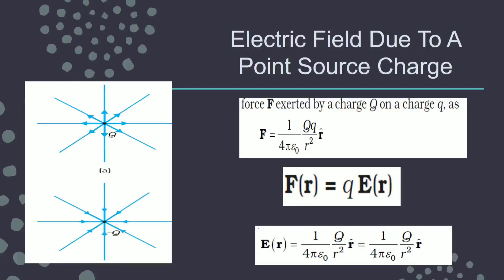To write the expression for the electric field due to a point source charge, first write the expression for force. With small q as the test charge, force is: F = (1/4πε₀) × Qq/r² × r̂. Here r̂ shows the direction — outward for positive source charge, inward for negative. Then E = F/q, or F = qE, giving E = (1/4πε₀) × Q/r² × r̂. The direction of r̂ is same as that of force and field.